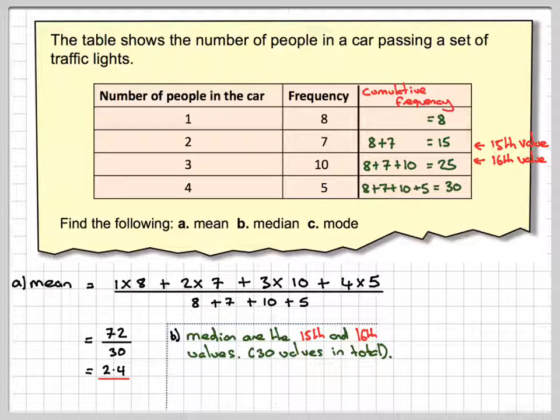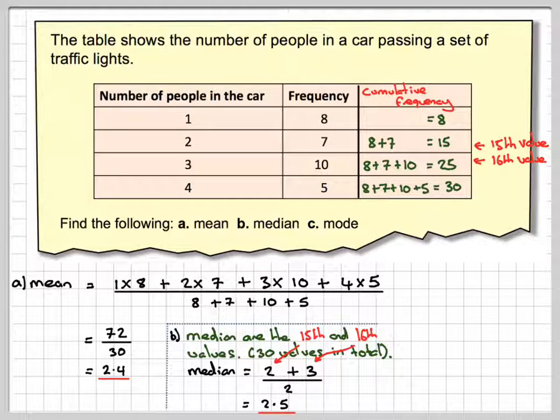Remember, the medians, you put them in order of size and take the middle values. So the middle values are going to be 2, which is the 15th value, and 3, and I have to divide that by 2 to get 2.5.